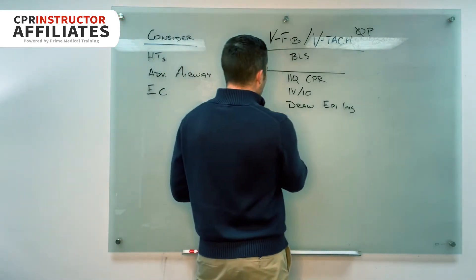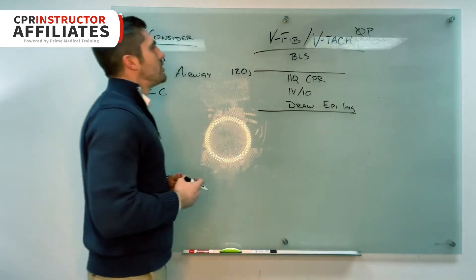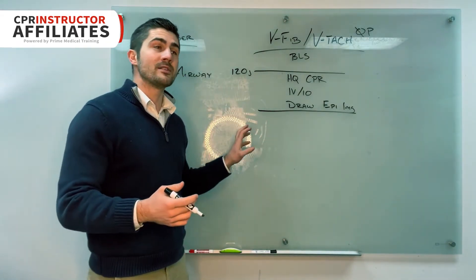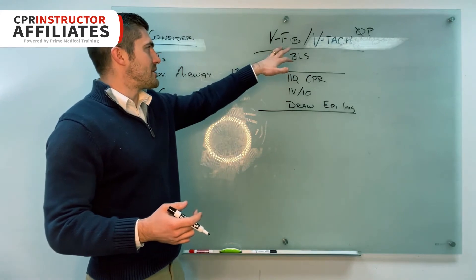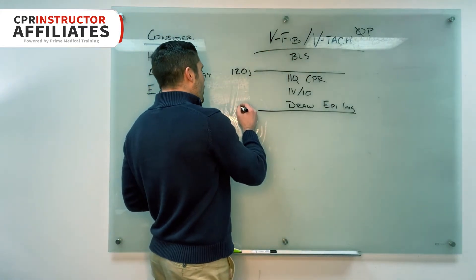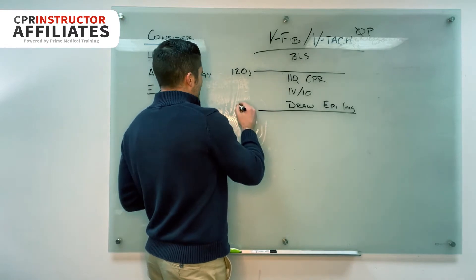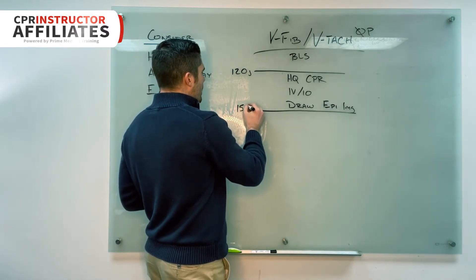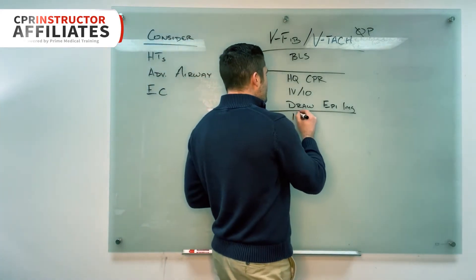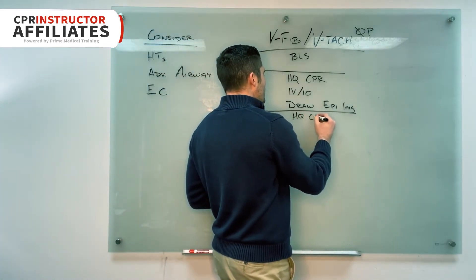Two minutes is up. What are we going to do next? They should say they're going to reanalyze the rhythm. They're going to recognize that it's still the same, so we need to shock again. But when we shock, we always need to escalate the doses. So let's say we go up to 150 joules. Okay, now what are we going to do?